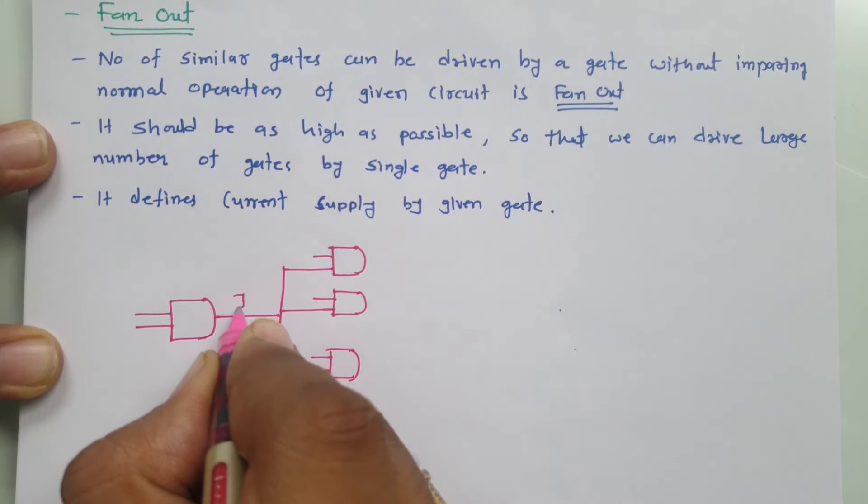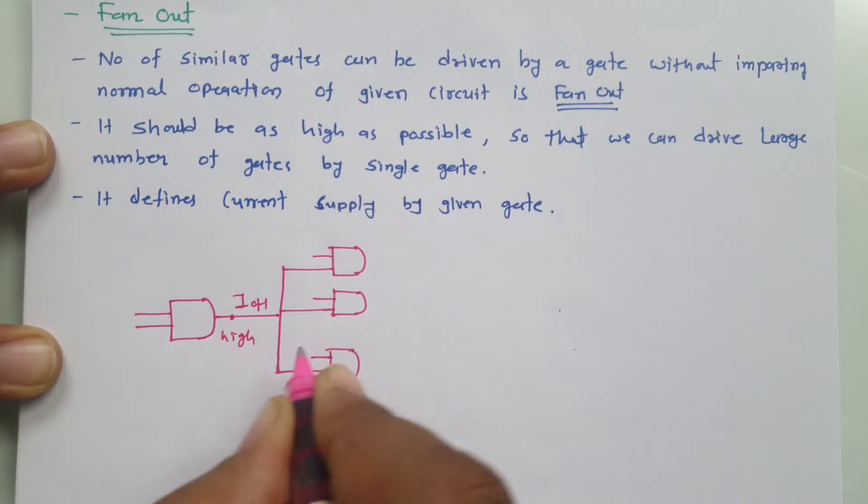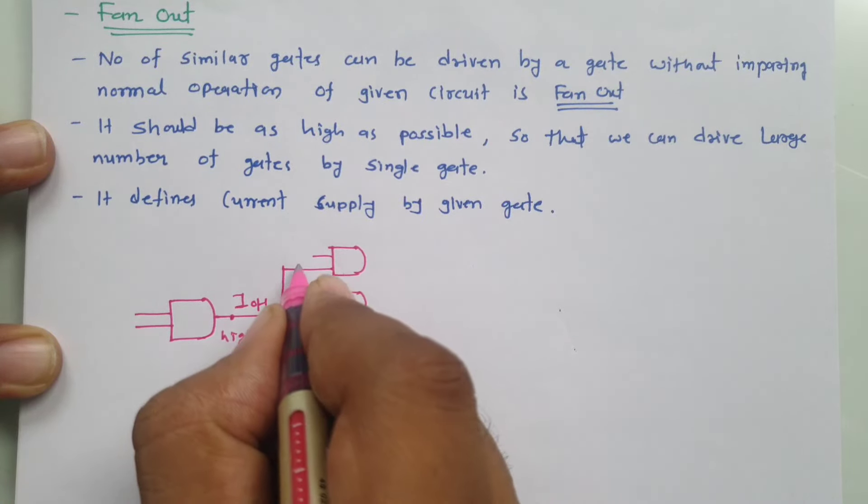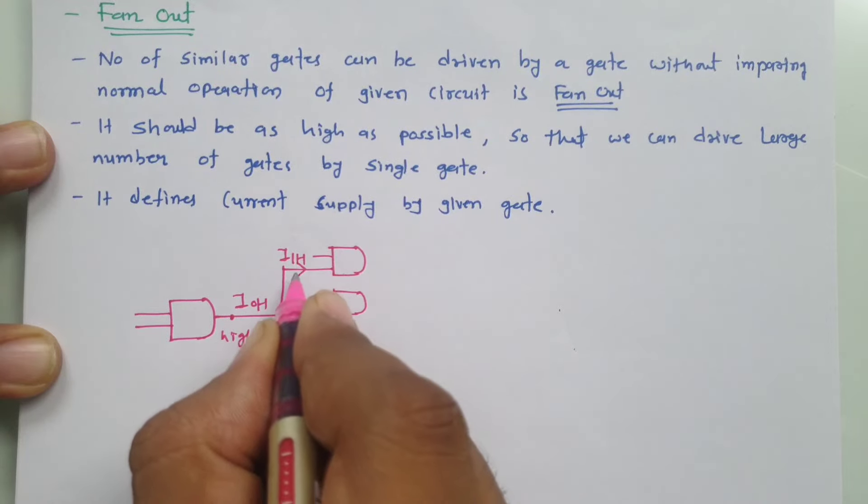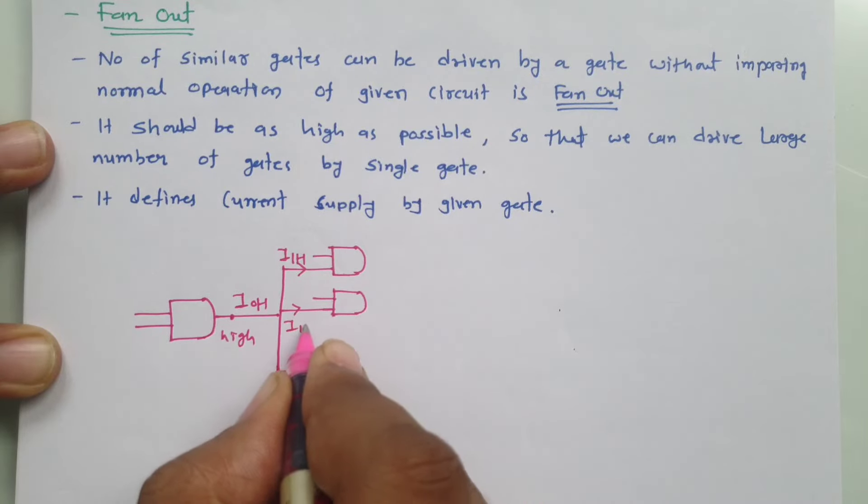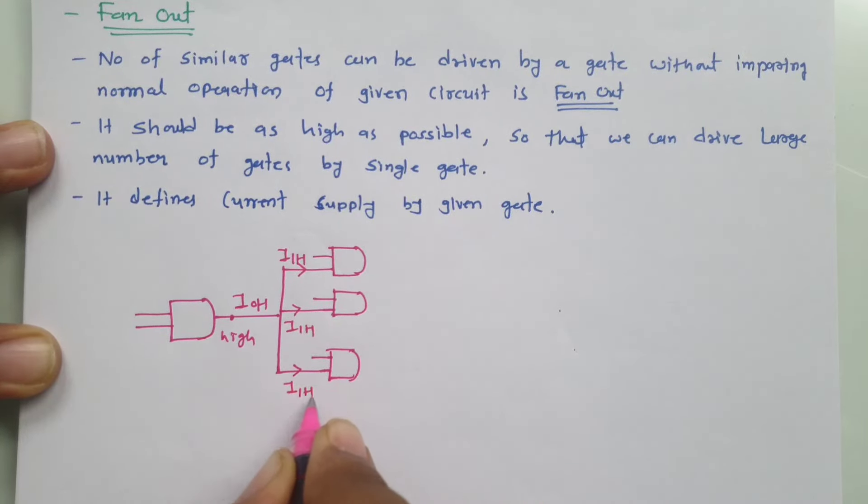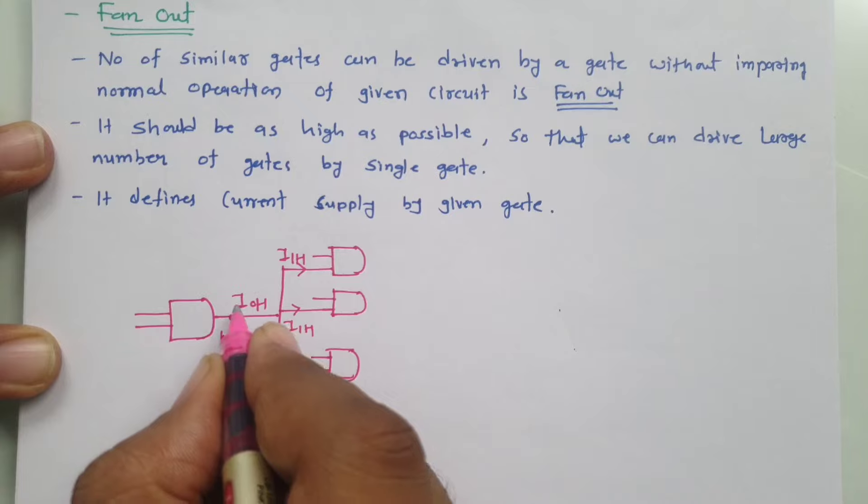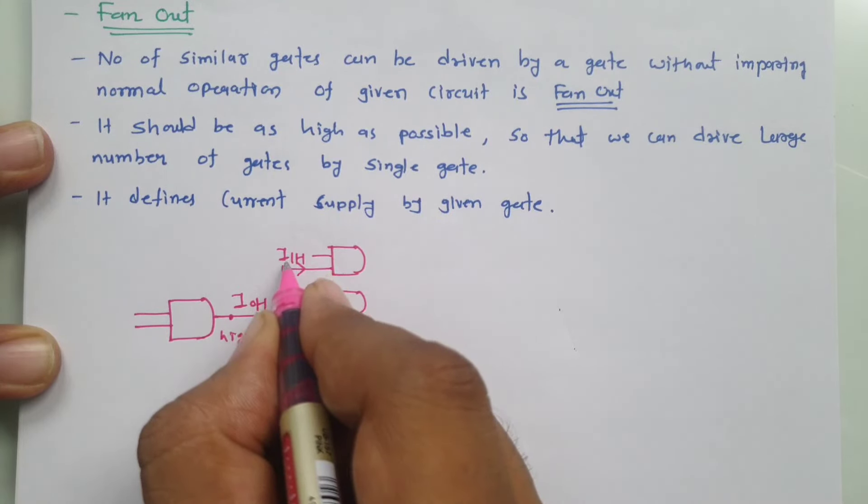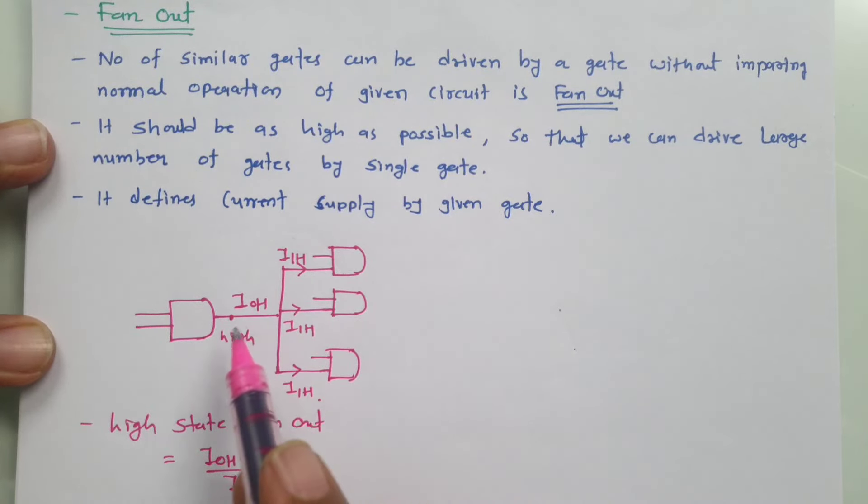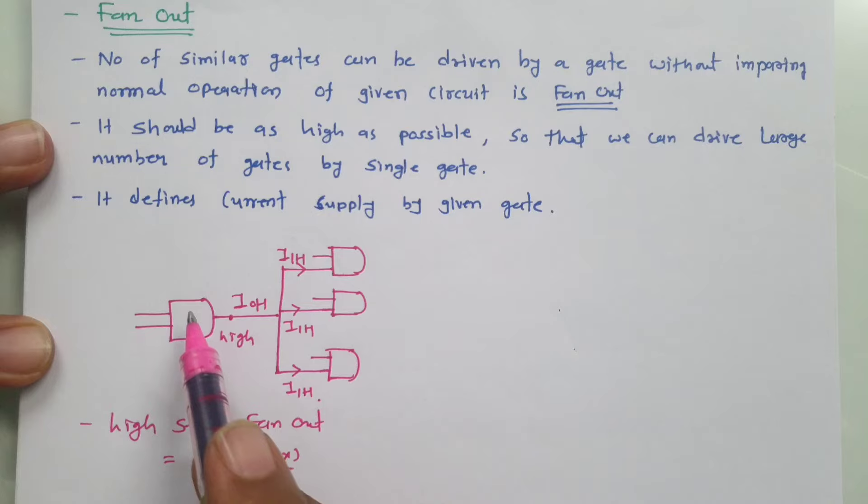Let us say that is IOH and this is what I am talking for logic high. And over here current input at different AND gates, let us say that is IH, here I am writing IH because this is for logic high. Then fan-out for high state at output side is IOH max divided by IIH. So this is fan-out for logic high for this AND gate.